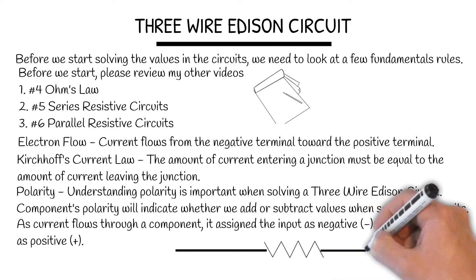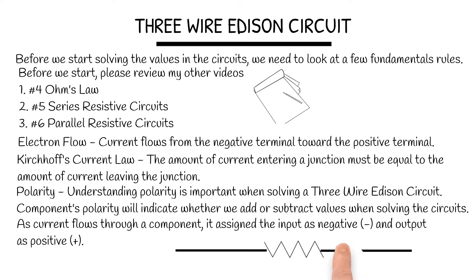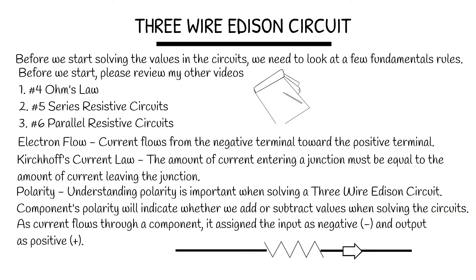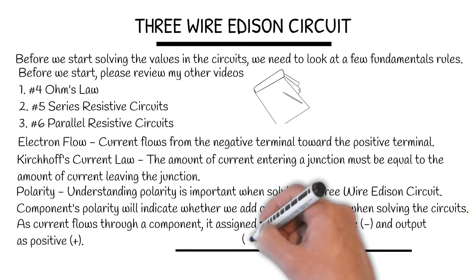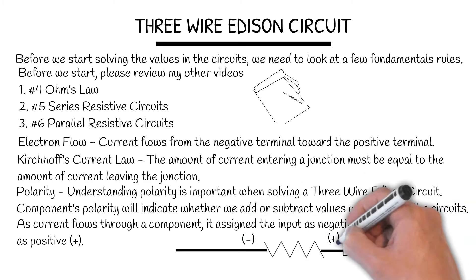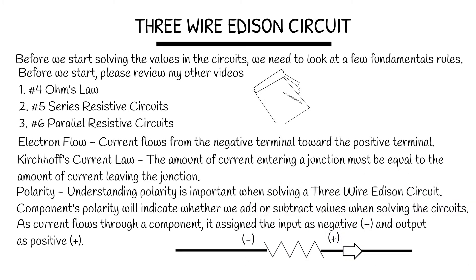We have a resistive load, and let's say current flows from left to right. Therefore, the input is negative and the output is positive.